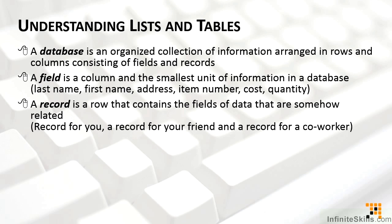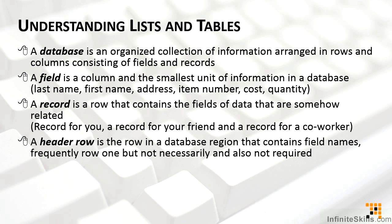For example, in a database for people, there might be a record for you on row 2, a record for me on row 7, and a record for your friend on row 2432. All of the fields across a single row are related to one another.